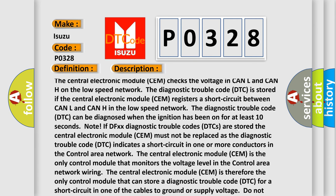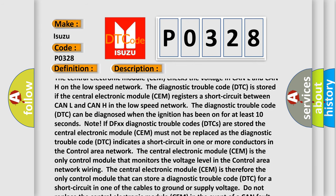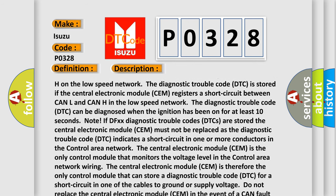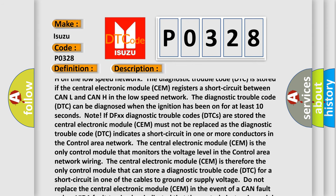If the central electronic module CEM registers a short circuit between CAN-L and CAN-H in the low speed network, the diagnostic trouble code DTC can be diagnosed when the ignition has been on for at least 10 seconds.